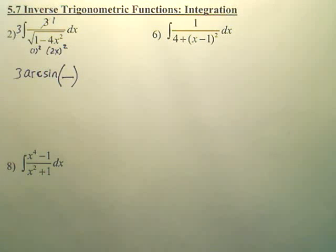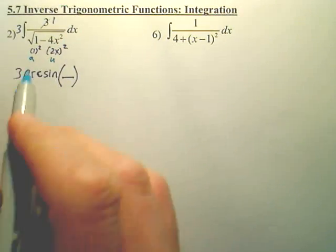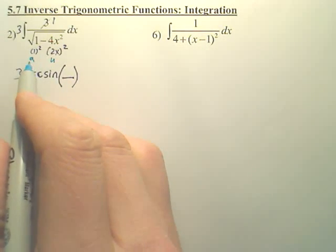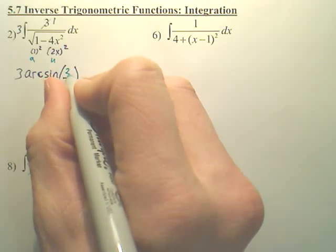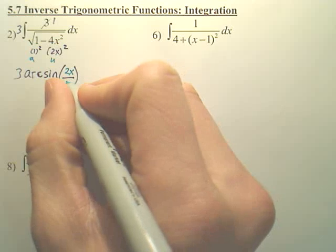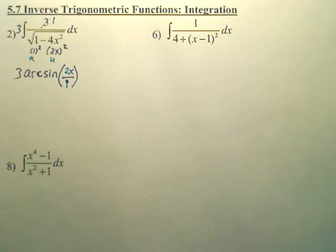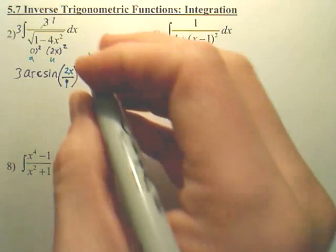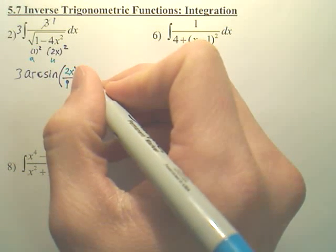Now, what's your u? Well, this is u. This is a. That's u. That's a. So if this is u over a, it's going to be 2x over 1. And from there, what do you get? And then you have a plus c.